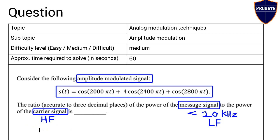For an AM signal, the carrier signal is in kilohertz, while for TV broadcasting the carrier signal is in megahertz. The use of the carrier signal is that it can travel through a larger distance because its frequency is high.